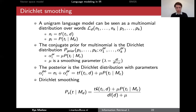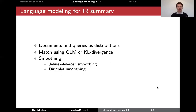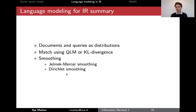To summarize, this is a different approach to document representation and matching: documents and queries are represented as distributions and can be matched using the query likelihood model or Kullback-Leibler divergence. To solve the problem of zero probabilities, we use either Jelinek-Mercer smoothing or Dirichlet smoothing. In your assignment you can try both and see which works best.